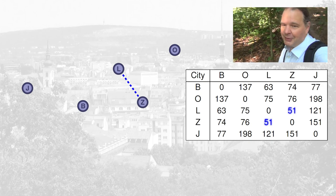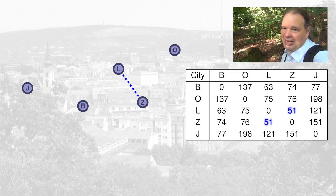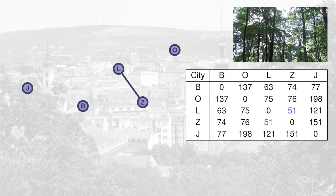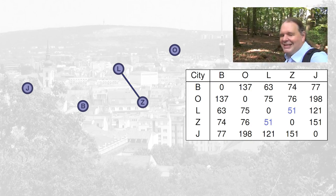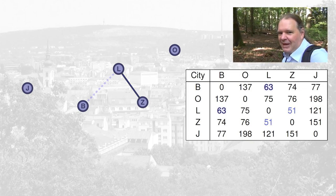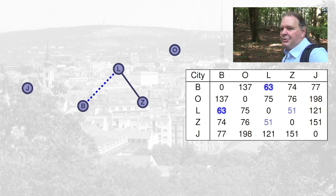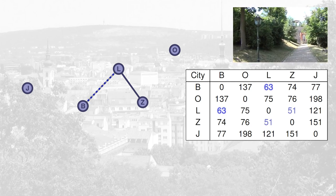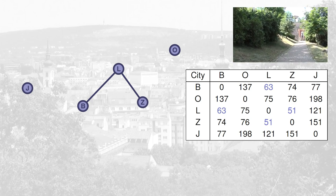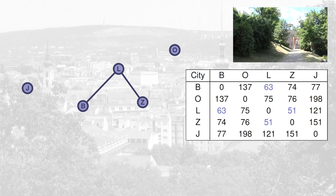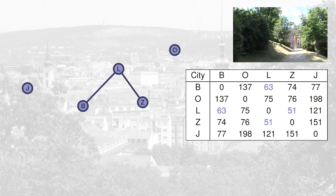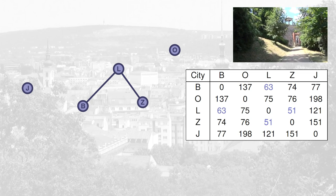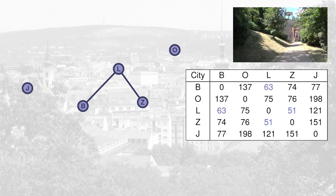The cheapest link is the 51-kilometer connection from Céline to Olomouc. To find the optimal network with three components, we need to place another link. The second cheapest link is the 63-kilometer connection between Olomouc and Bernouc. Are we sure this is optimal? Yes, because every network with three components needs at least two links, and we have chosen the two cheapest ones.